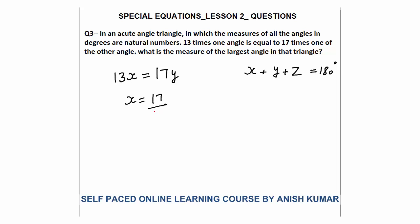Now X equals 17Y divided by 13. Since all angles are integers, Y must be divisible by 13 — otherwise X will be a fraction. So the minimum value of Y is 13, giving X equals 17. Then X plus Y equals 30, and Z equals 150. But this is not valid because the triangle is acute, so all angles must be less than 90 degrees. Y can also be 26, giving X equals 34 — then X plus Y equals 60 and Z equals 120, also not valid.